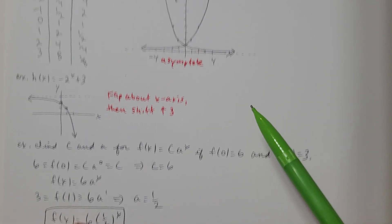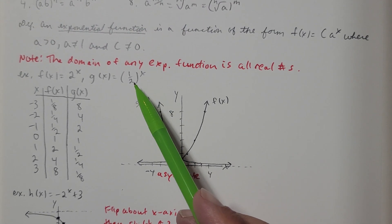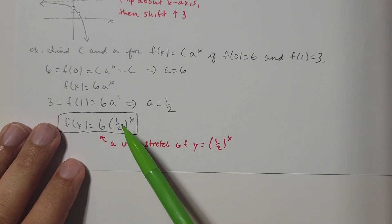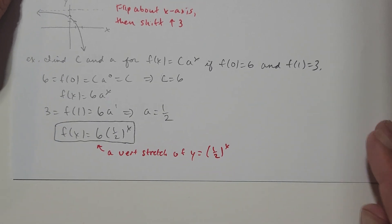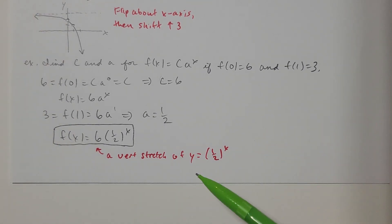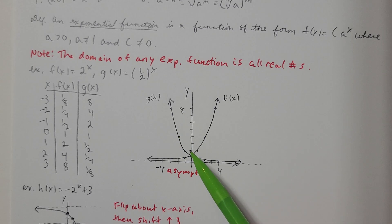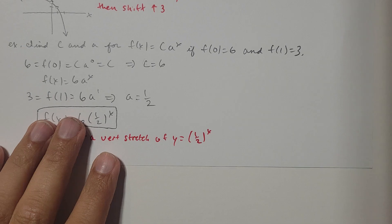Now in the last video, we graphed the function g(x) equals 1 half to the x. If I have the function 6 times 1 half to the x, I think transformations on this, so that would be a vertical stretch of 1 half to the x. I'm stretching it out by a factor of 6. Or in other words, I'm just going to multiply all the y values on the graph of g(x) here by 6 to get the new graph there.